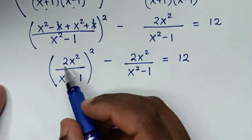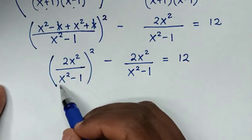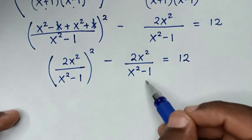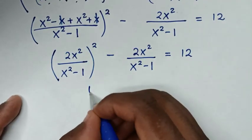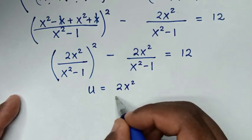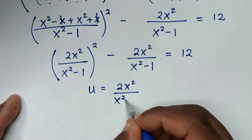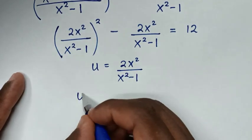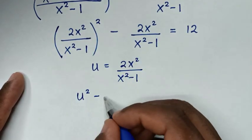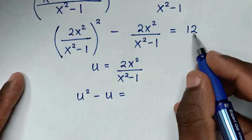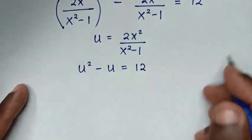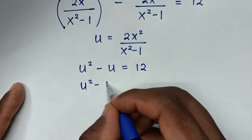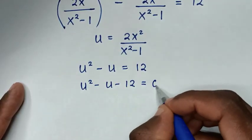Since 2x²/(x²-1) appears twice, we let u = 2x²/(x²-1). The equation becomes u² - u = 12, and rearranging gives us the quadratic equation u² - u - 12 = 0.